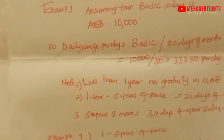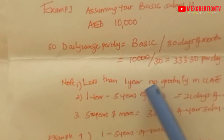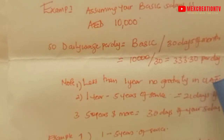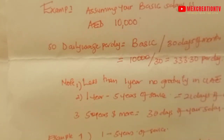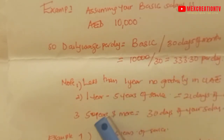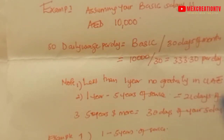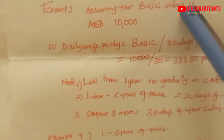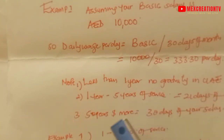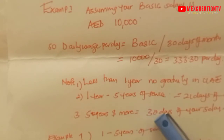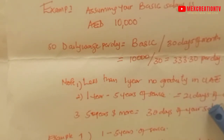Remember that under the limited contract: if you have not completed one year, you do not get gratuity. If you are in that company from one year to five years of service, then you get 21 days of your basic salary as gratuity. And if you are five years and more — say five, seven, ten, or twenty years — then you are entitled to 30 days of your salary as your gratuity.